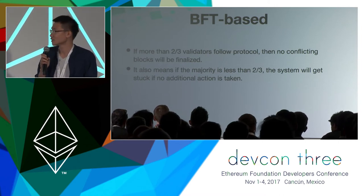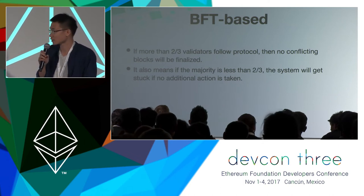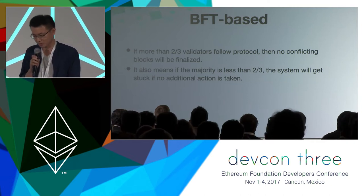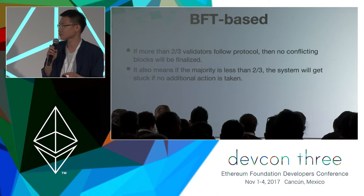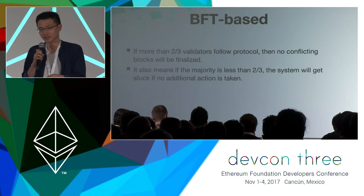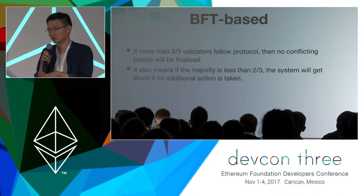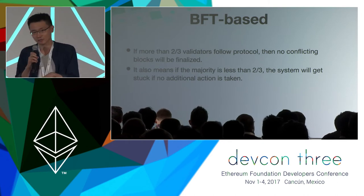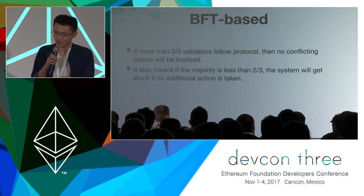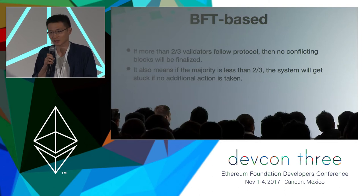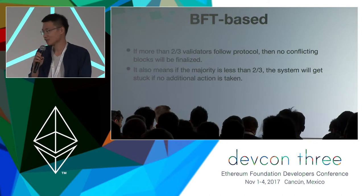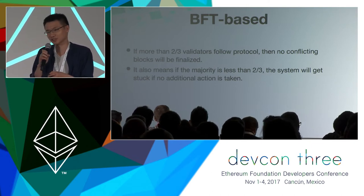We need to keep in mind that this is Byzantine fault tolerant based. Once again, more than two-thirds of validators need to follow the protocol so no conflicting blocks will be finalized. Validators could misbehave — they may try to get the system stuck, or maybe split into two groups where each group has less than two-thirds voting weight, causing the system to get stuck. This is a situation we need to avoid.